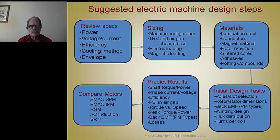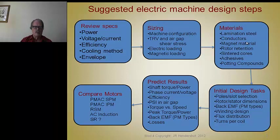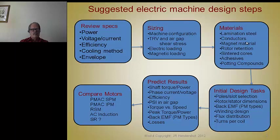The most important thing is to review the specifications, which are the requirements of the machines you're supposed to design. Included in the specification is certainly the output power required — rated power, peak power — and if there's anything having to do with peak power, what's the duty cycle of that power? Is this a continuous duty machine or intermittent duty? Traction applications are required to produce peak power for accelerating or hill climbing, so the characteristics of that are very important, particularly from the thermal aspects. You also need to know what the voltage is, because current costs a lot more than voltage, whether it's in the motor or the inverter.